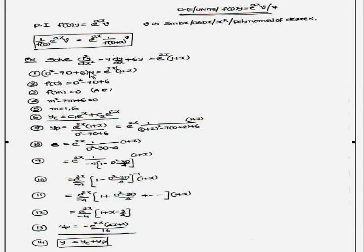Here he has given the problem. So first step is D² - 7D + 6 into y = e^(2x) into (1+x).